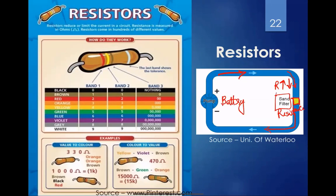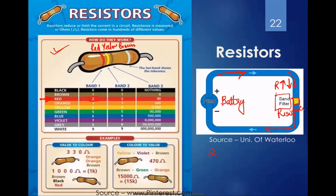If you hold a resistor in your hand, you'll notice it has color bands. For example, one resistor has red, yellow, and brown bands. Using the color code chart: red represents 2, yellow represents 4, and brown means add one zero — giving 240 ohms. That's how you read the resistor value from its color bands.